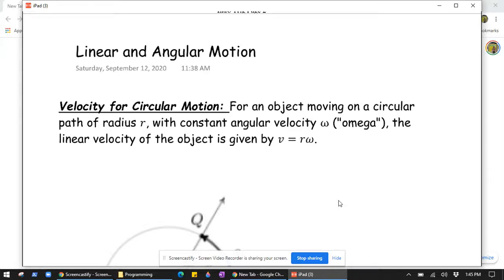Okay, in this video we're going to look at linear and angular motion. We have a claim here and we're going to derive it, then do a problem. It says for an object moving on a circular path of radius r with constant angular velocity omega, the linear velocity of the object is given by v equals r times omega.